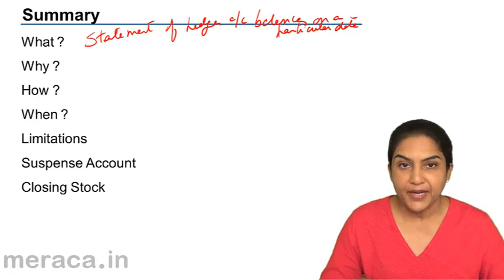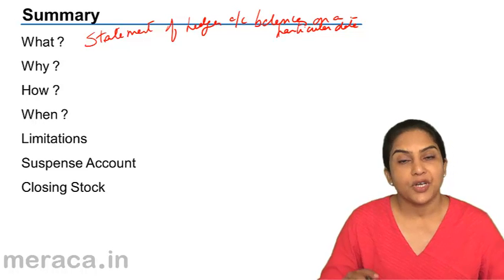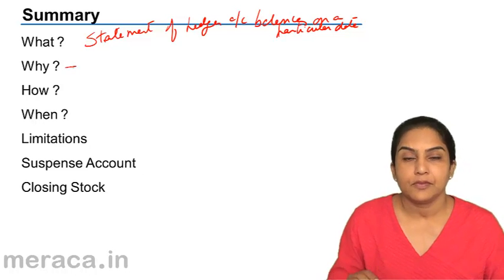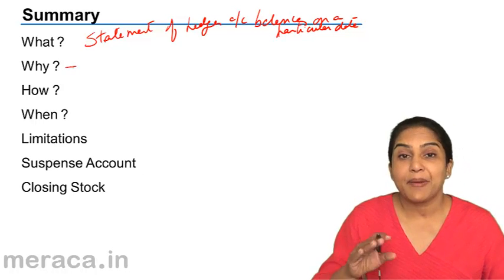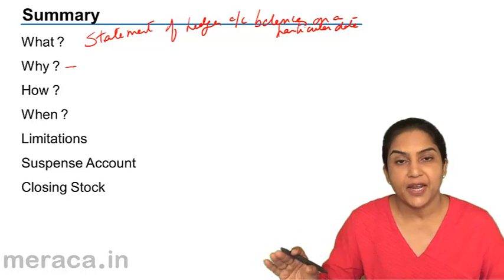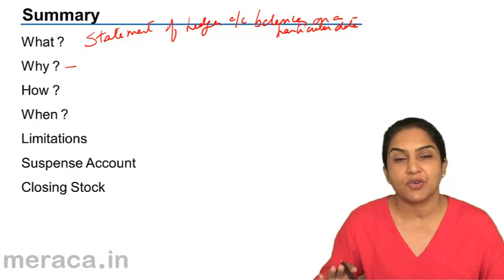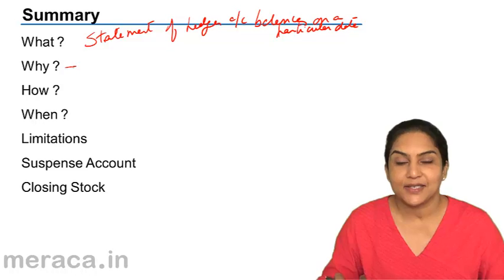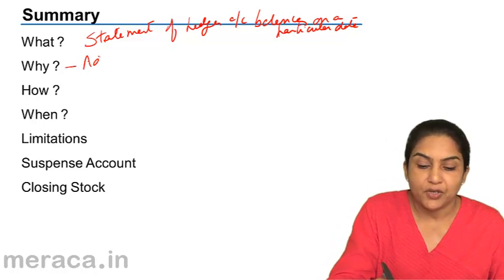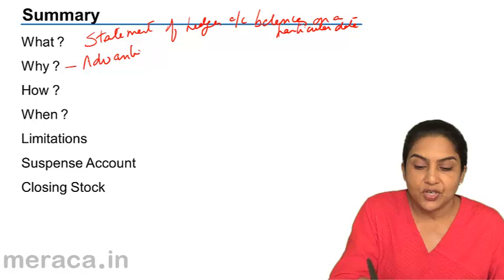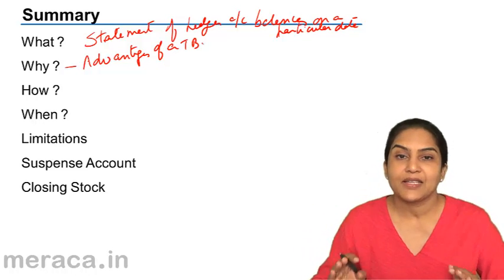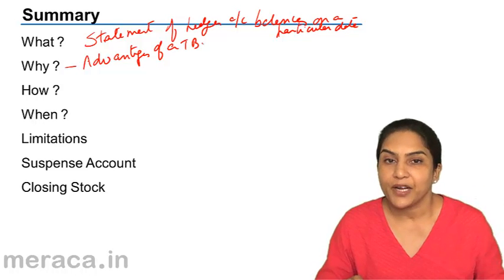Why is it prepared? It is prepared, one, to confirm the arithmetical accuracy of the books. Two, it is the basis on which final accounts are prepared — the profit and loss account and the balance sheet. And also, we get a summary of all the balances at one place. These were the advantages of the trial balance: arithmetical accuracy, the basis for preparing final accounts, and all balances at one place. If we want details, we can go back to the ledger.